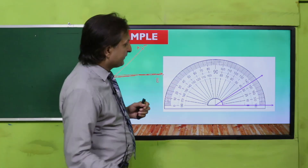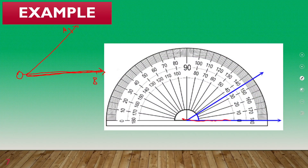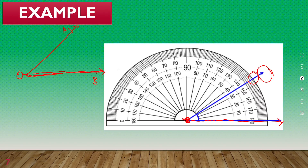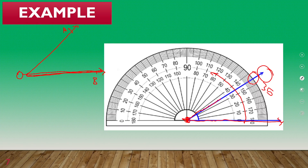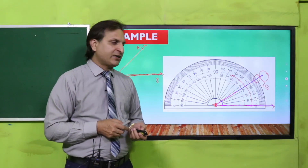After aligning the baseline of the protractor with the lower ray of the angle and placing the midpoint on the vertex, look at where the second arm falls. Read the lower scale at that point — that is the measure of the angle. Then get it checked by your teacher.